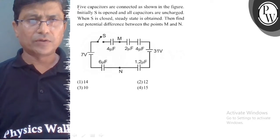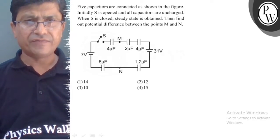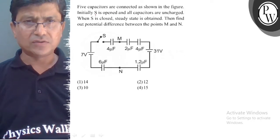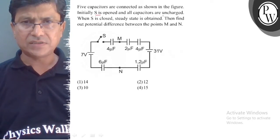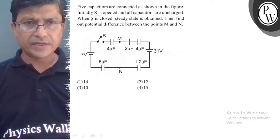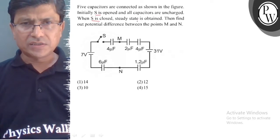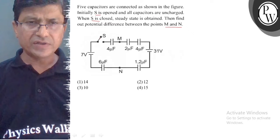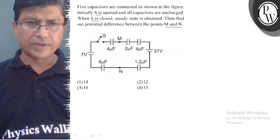Hello, let's understand the question first. Five capacitors are connected as shown in the figure. Initially S is open and all capacitors are uncharged. When S is closed, steady state is obtained. Then find out potential difference between the points M and N.